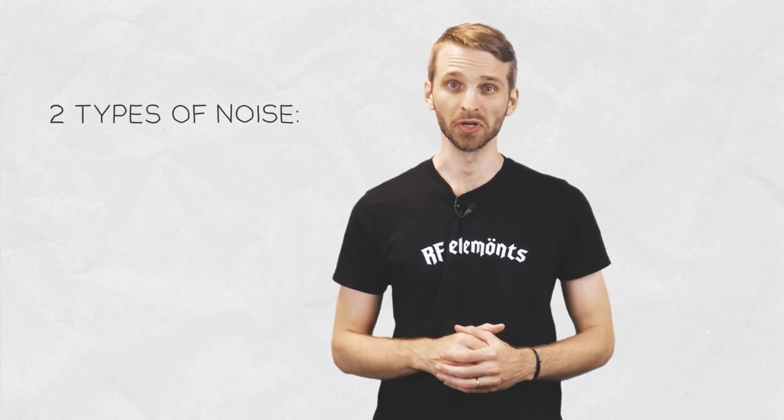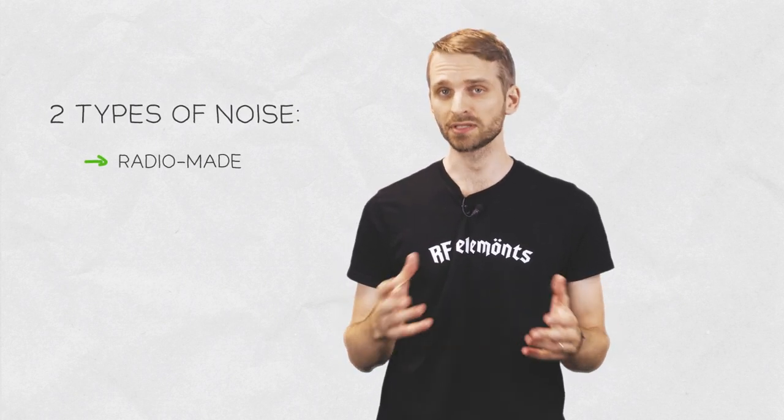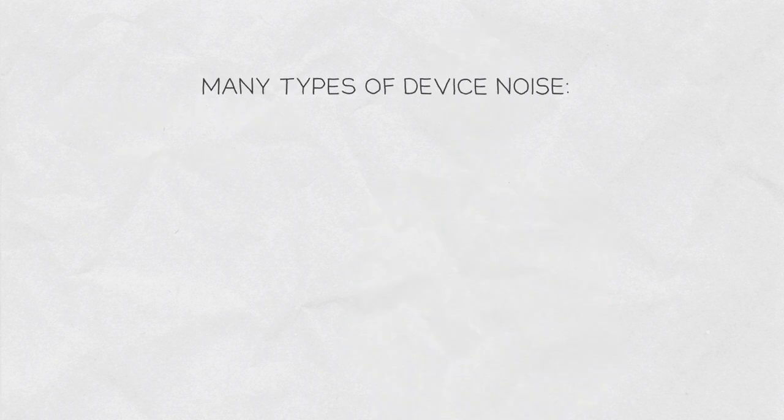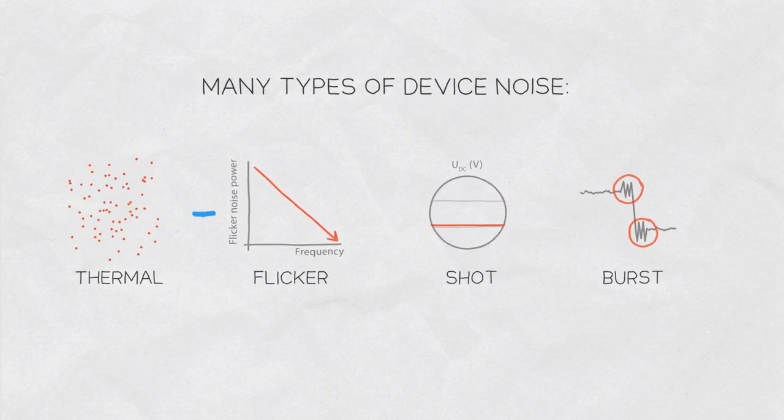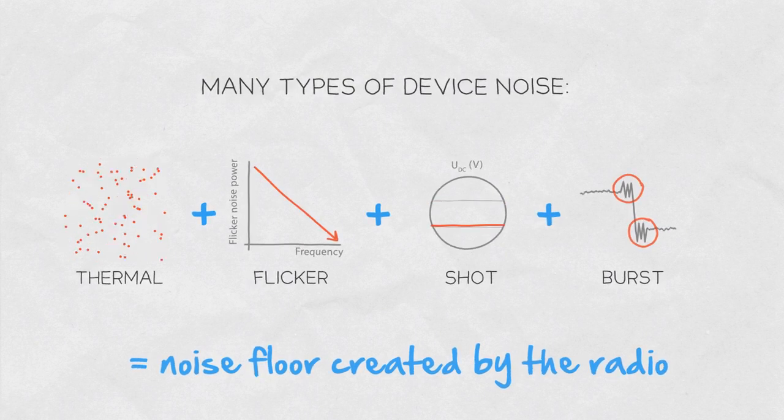There are two main sources of noise. First is the noise created by the radio itself because of the physics of the parts it is built from. There are many types of noise devices produce, such as thermal noise, flicker noise, shot noise or burst noise. Some of all these types of noise makes up the noise floor created by the radio itself.